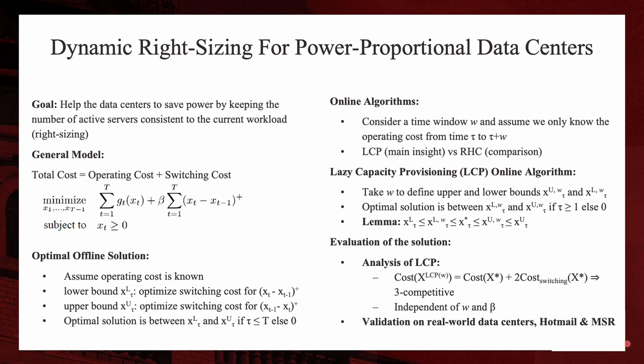The authors used a general model for this problem. Basically, we want to minimize the cost of the data center and the cost consists of two parts, the operating cost and the switching cost. What the operating cost means is the cost of maintaining the servers and also the cost by the increased delay, because when you use less servers, you may have more delay and this will cost you, while the switching cost is the cost to toggle the servers between power saving mode and the active mode.